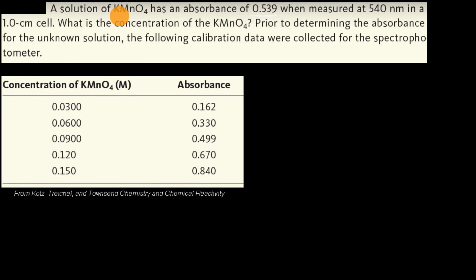The problem states: a solution of potassium permanganate has an absorbance of 0.539 when measured at 540 nanometers in a one centimeter cell.